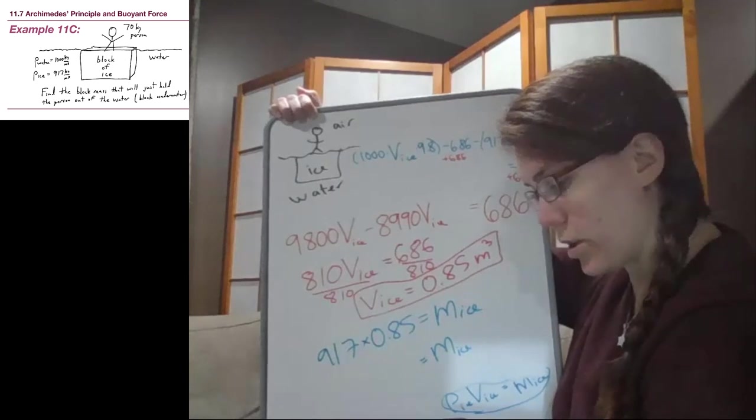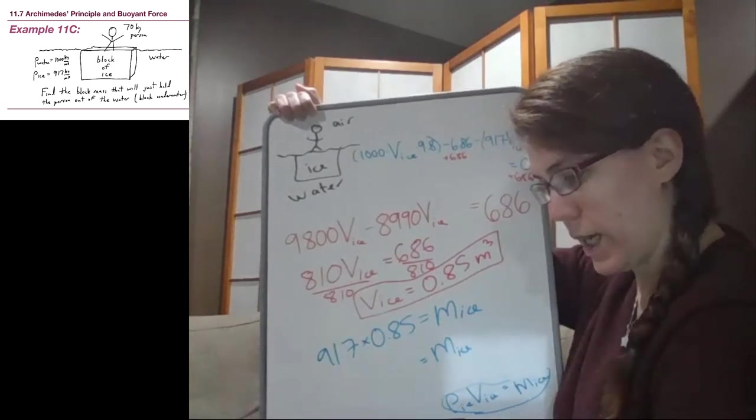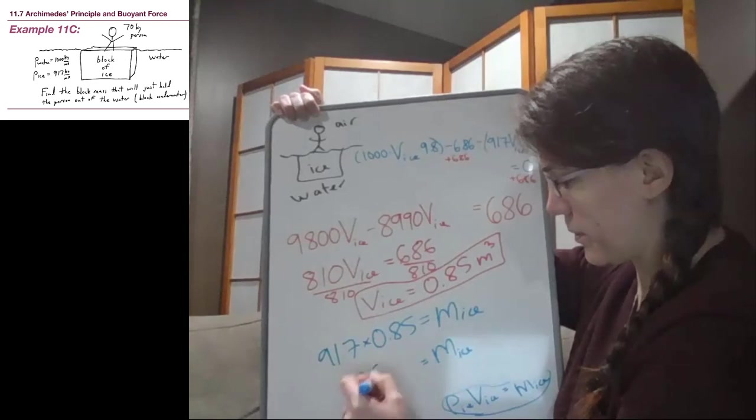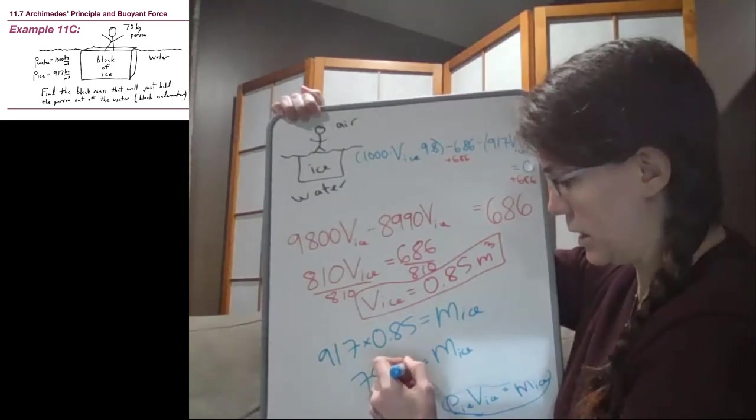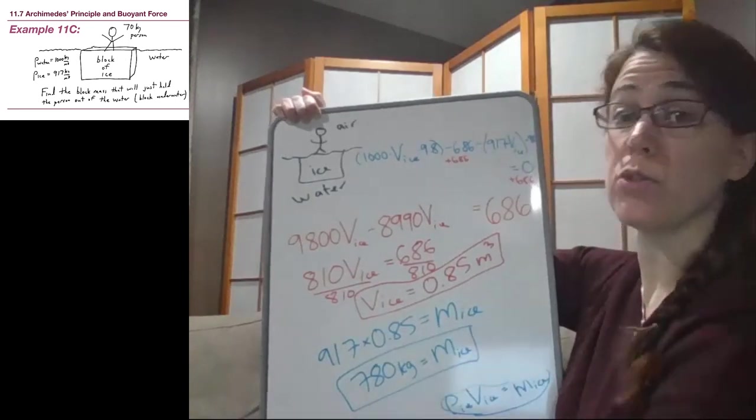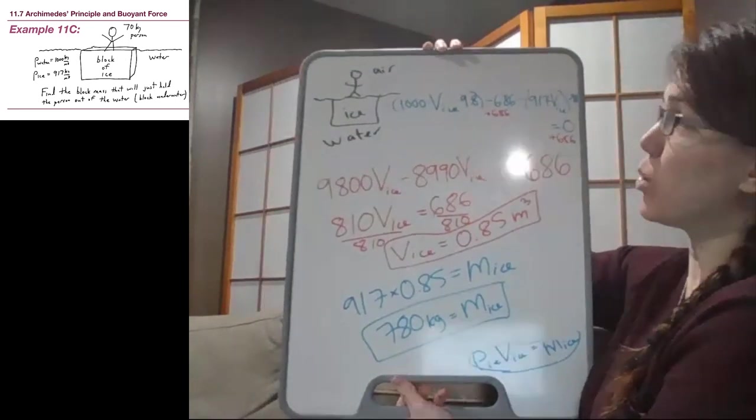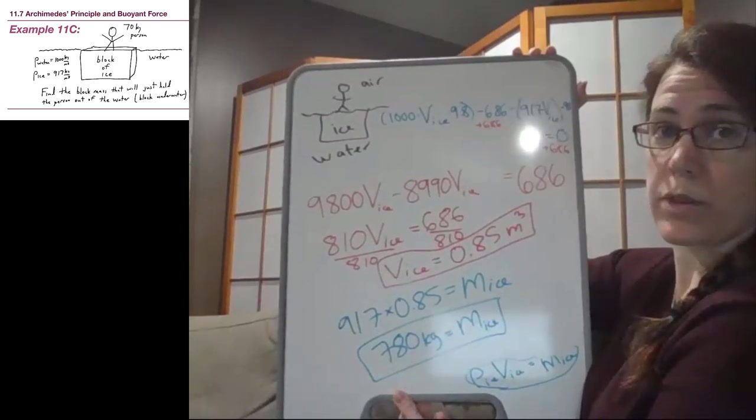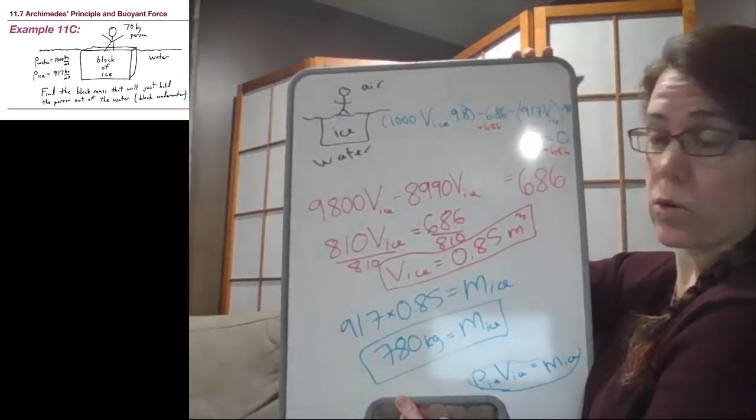And so the mass of the ice that we're looking for ends up being 780, with some rounding, 780 kilograms. That's a huge amount of ice. That is more than 10 times, more than 11 times the mass of the person that it is trying to hold up.